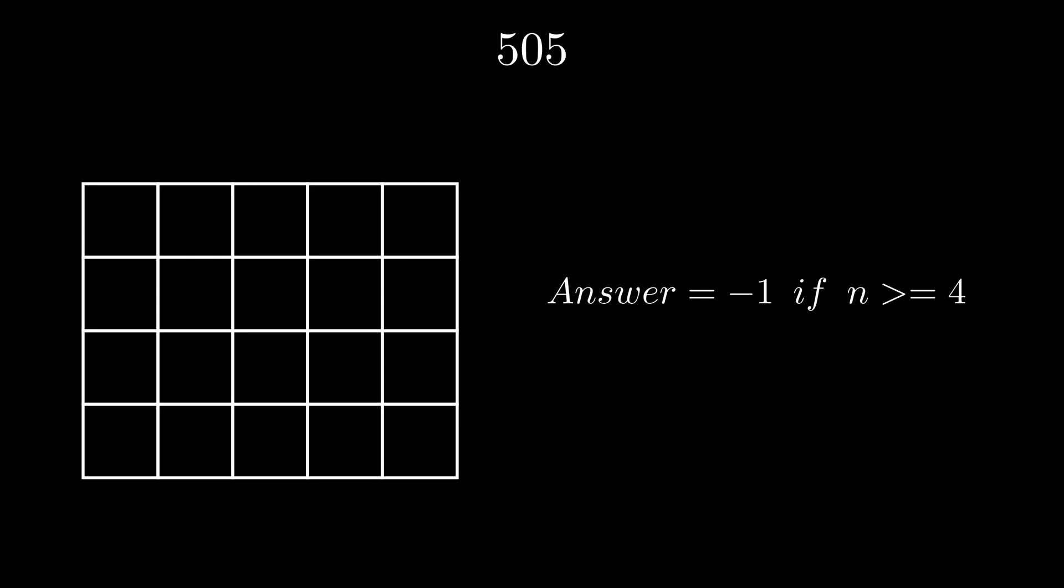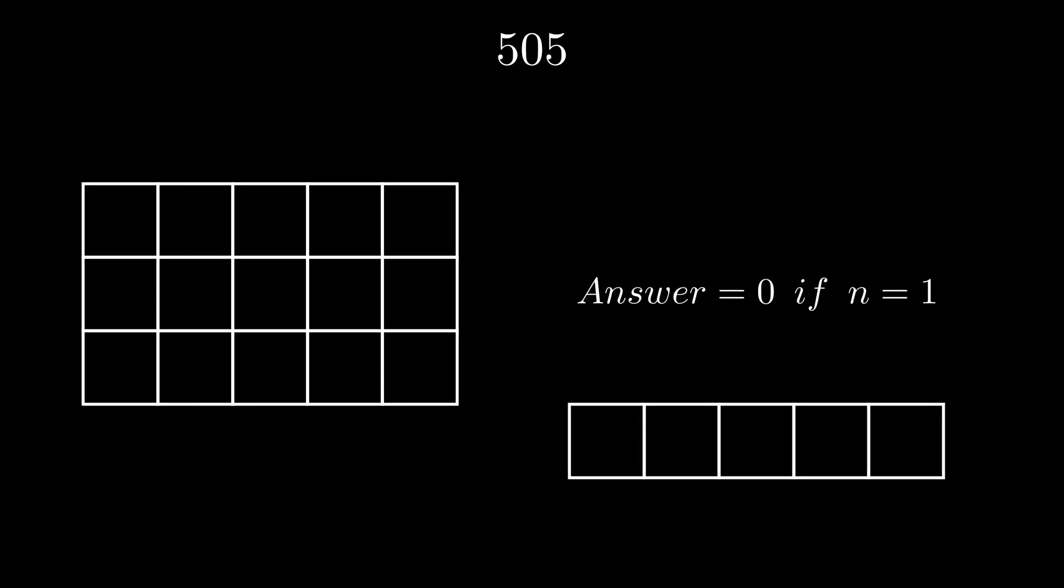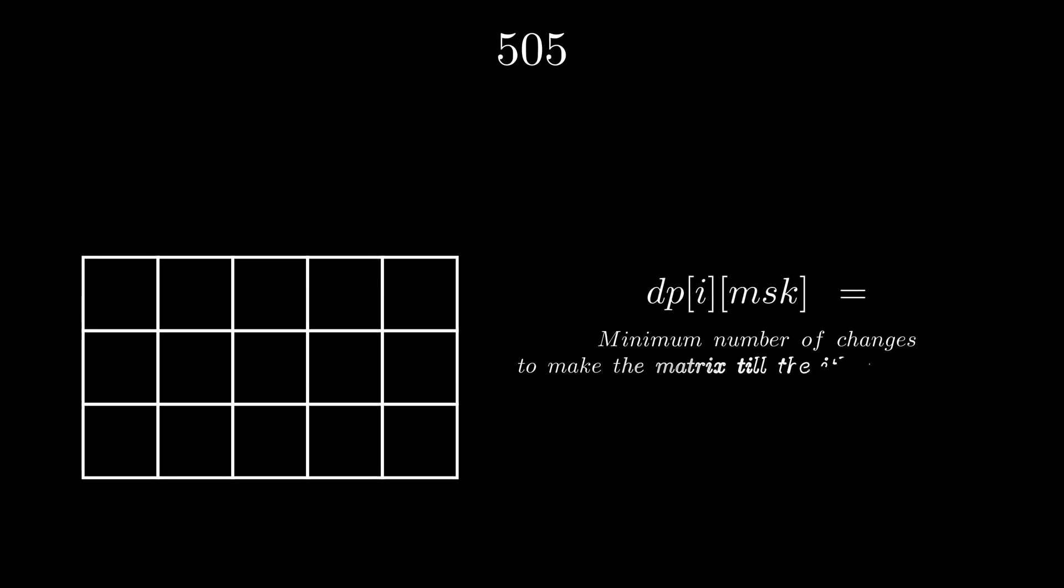Now if n is equal to 1, it's easy to see that the answer is 0 as we never have any even length square sub-matrices. Now we're left with just n equals 2 and n equals 3. We can use a bitmask DP to solve this problem now. Let dp[i][mask] denote the minimum number of changes to make the matrix till the ith column good, if the last column is mask.